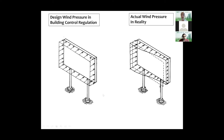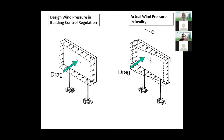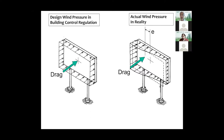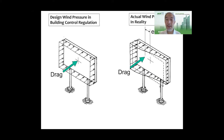If you look at building design standards or building control regulations, they may give you a wind load for design. Some standards provide a uniform wind pressure that creates just a force at the center of the panel. But in reality, you may have a non-uniform pressure distribution, making the force eccentric from the center with a different structural effect. To ensure safety, you need to use realistic wind loads in your design, and wind tunnel testing can provide this type of realistic wind pressure.